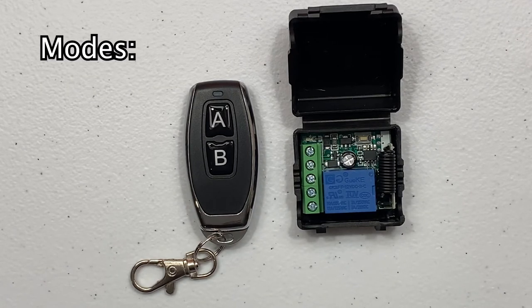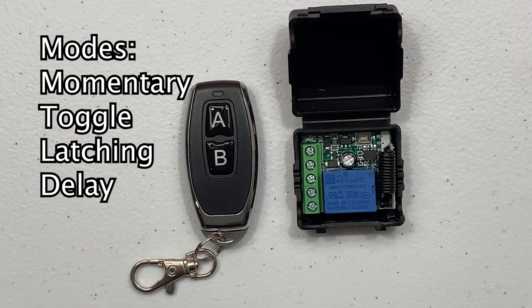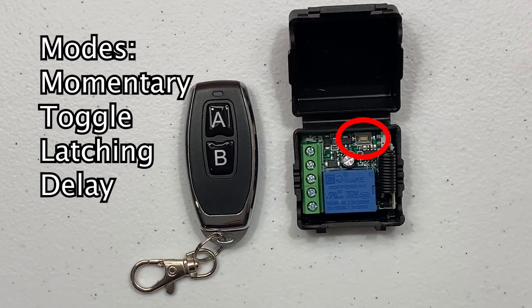The relay has four operating modes: momentary, toggle, latching, and delay, and can be selected by pressing the learn button the appropriate number of times and then pressing the button on the transmitter to pair the two.